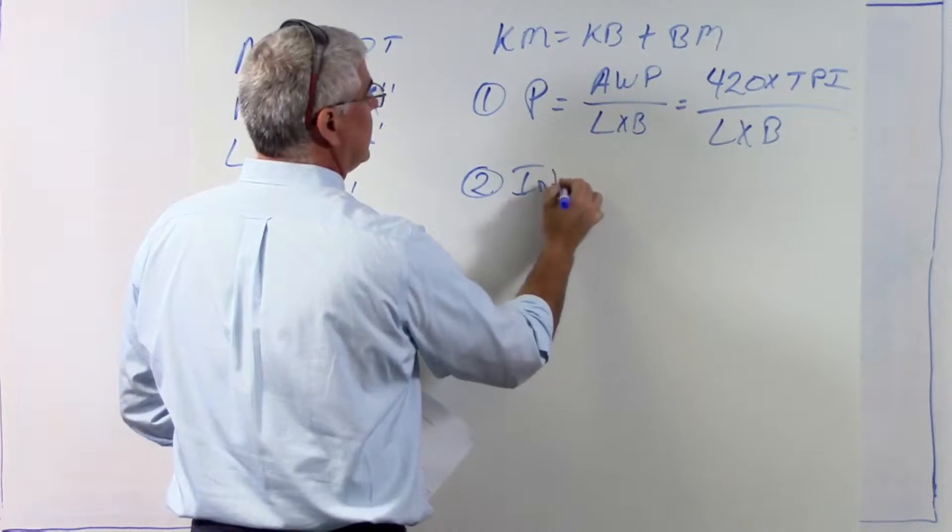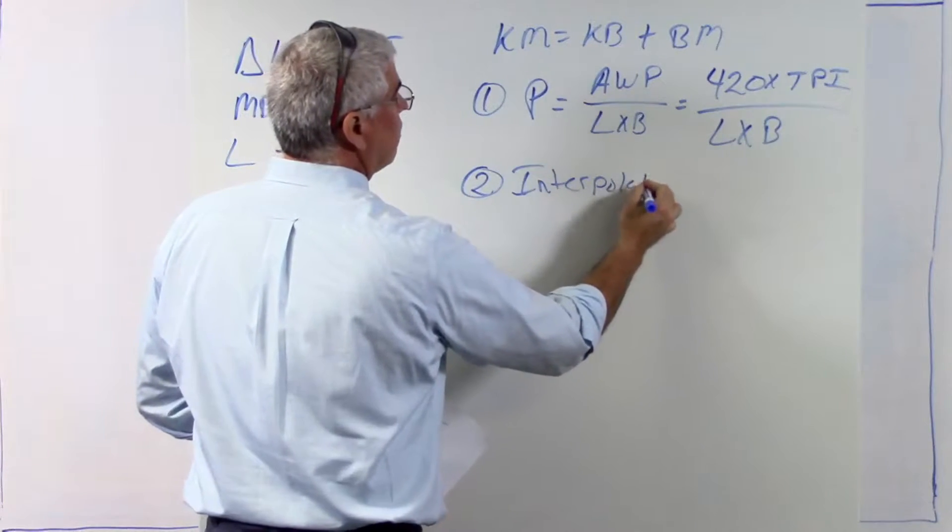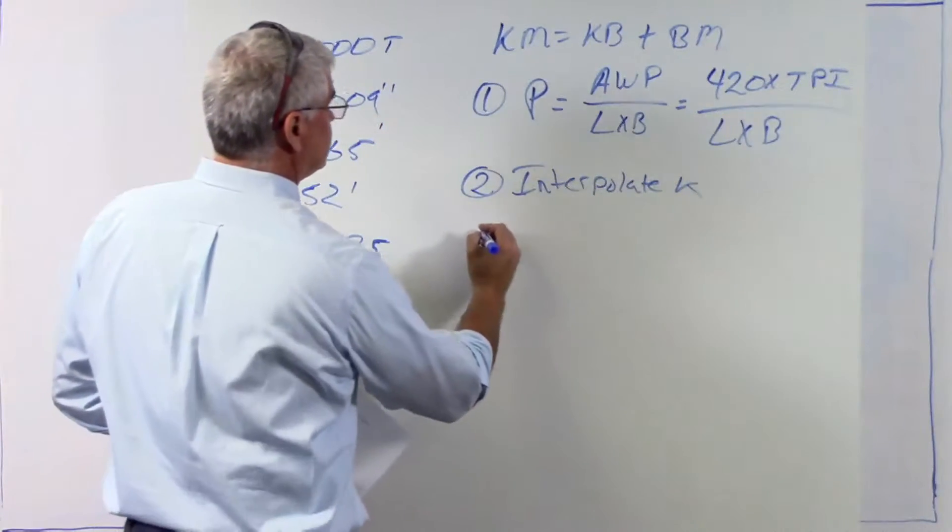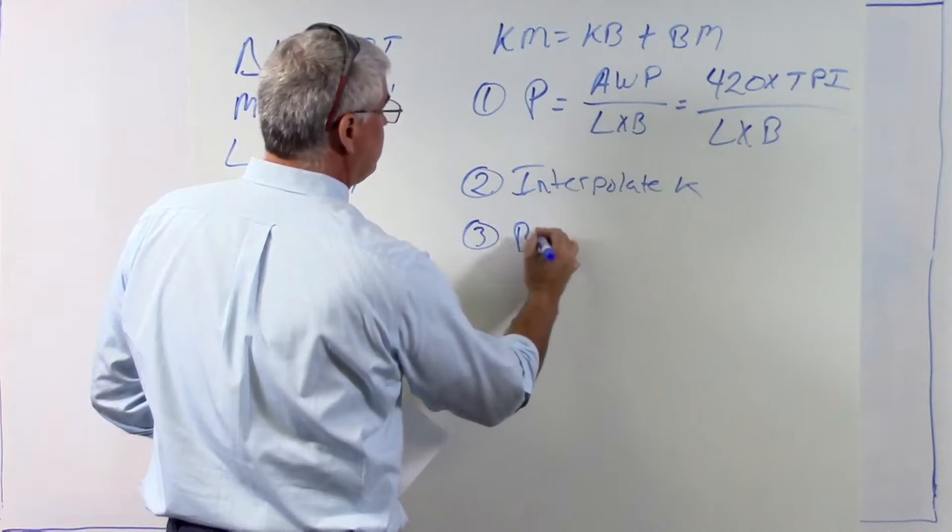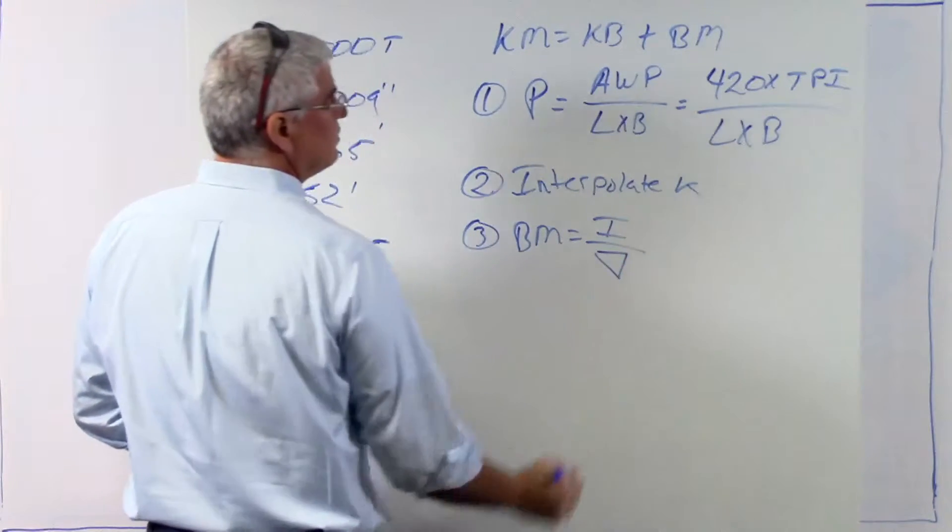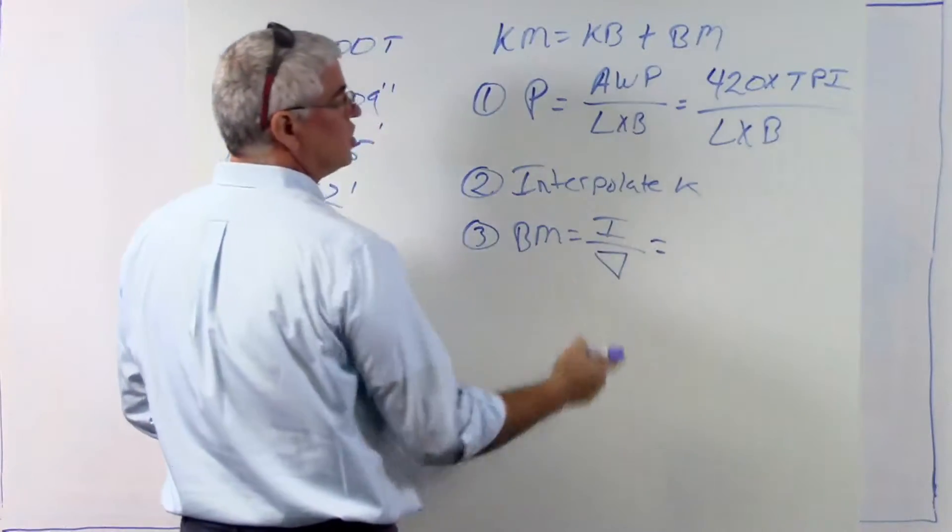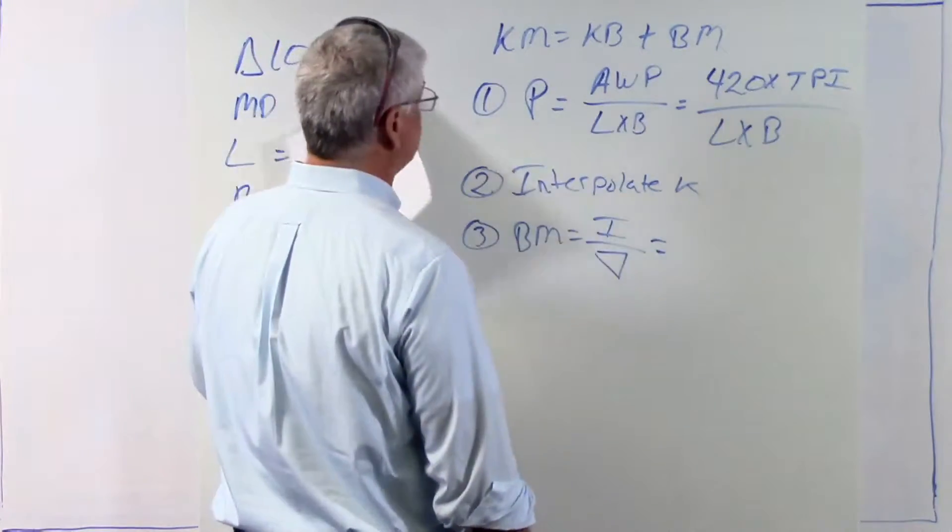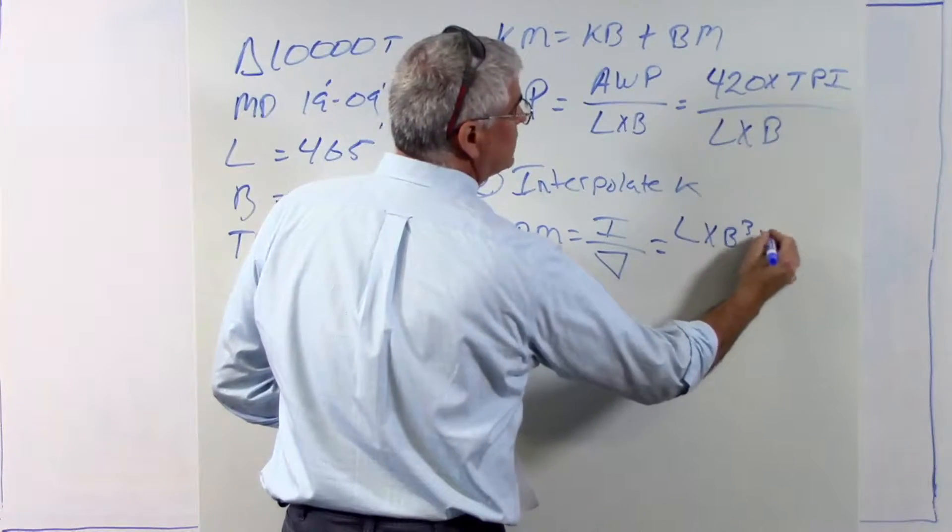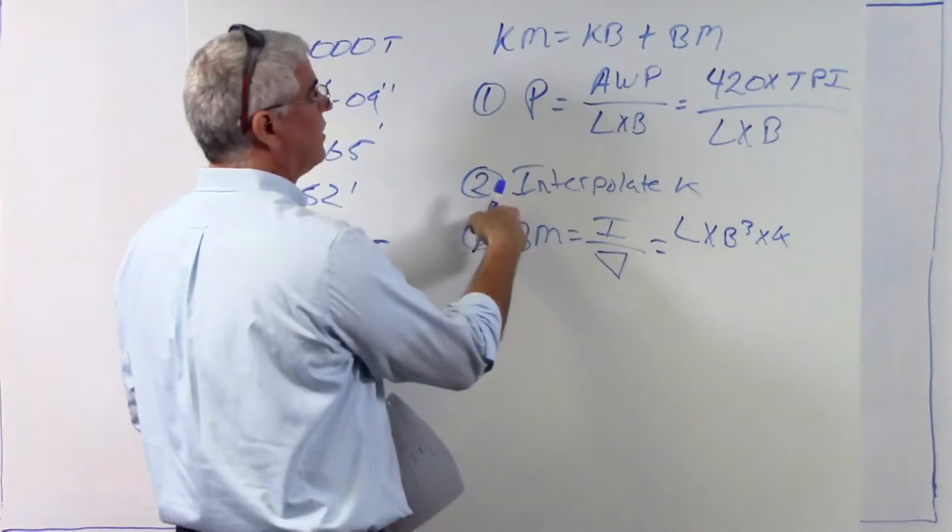Step two, I'm now going to interpolate k. And we're going to need to go to the deadweight scale for that. Step three, I'm going to solve for bm, which is moment of inertia divided by the volume of the displacement. Well, moment of inertia, for this case, this is a merchant vessel, it's going to be the length times the beam cubed times this k constant that we're calculating in step two.